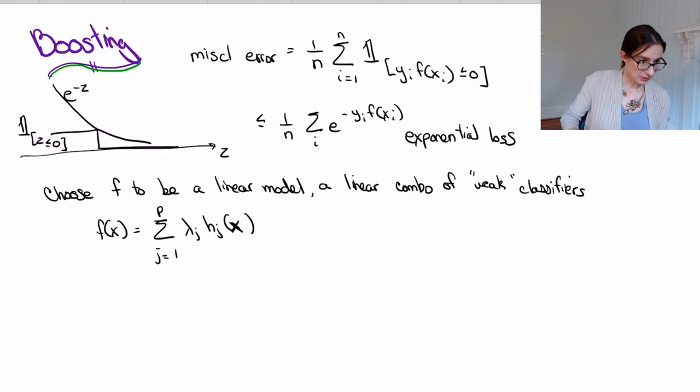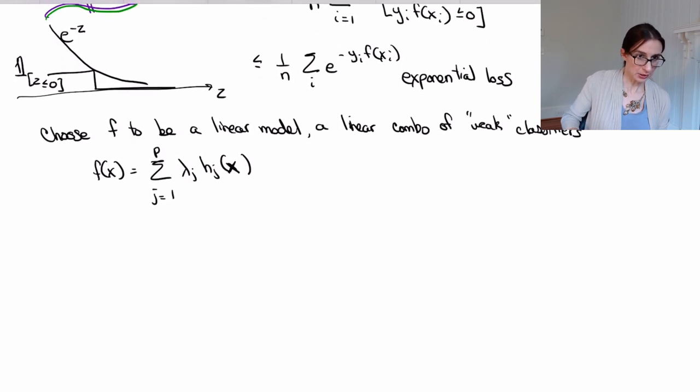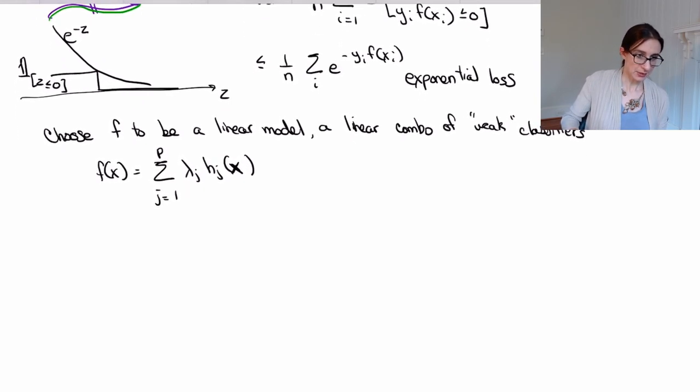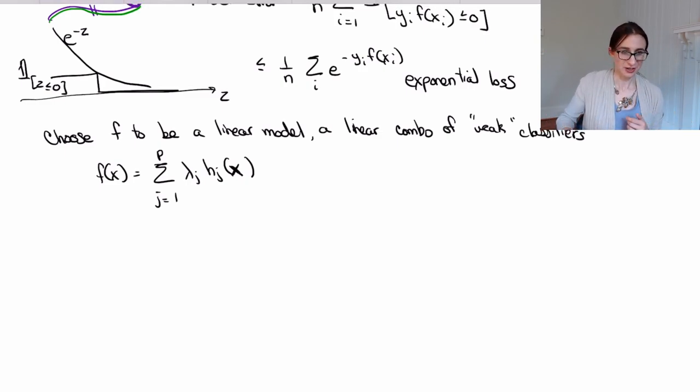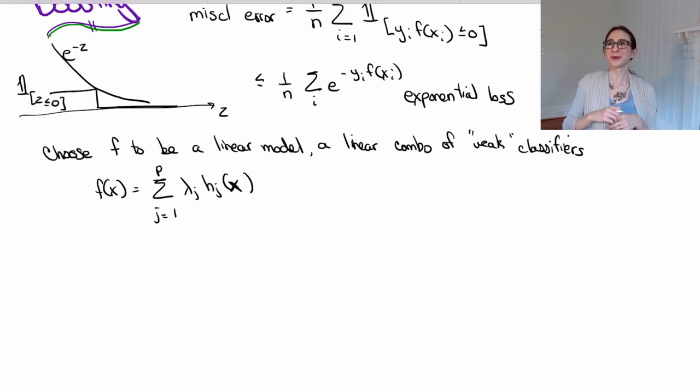Now, if I'm boring, then I'm just going to choose the jth weak classifier to be the jth feature. I could in reality choose the jth weak classifier to be decision tree j, but I'm boring today. And I'm just going to choose it to be the jth feature. And I'm assuming here that everything's binary, all the data are binary, all the weak classifiers are binary, everything binary.